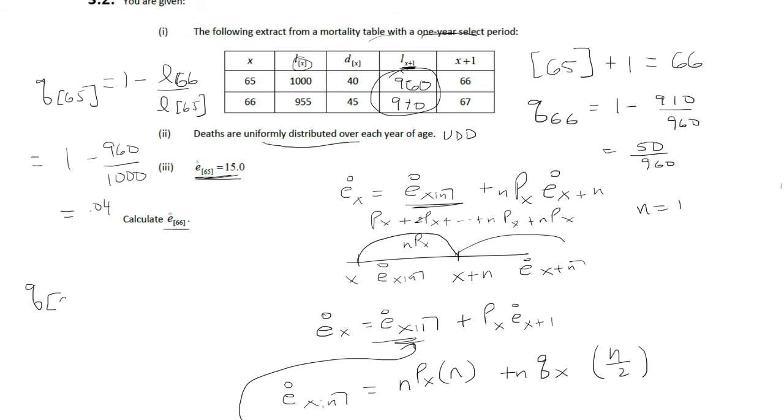Let's write it like this. That is the number of people that are dead at age 66, over how many people are alive at the beginning of age 66. So that is 45 over 955.